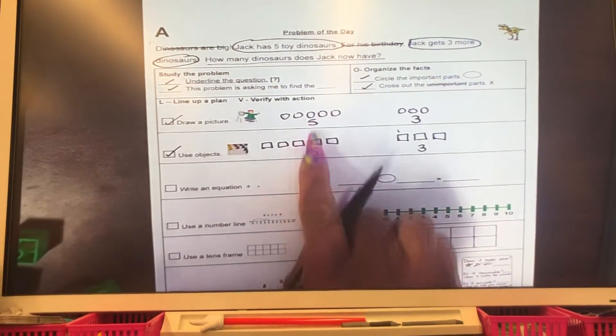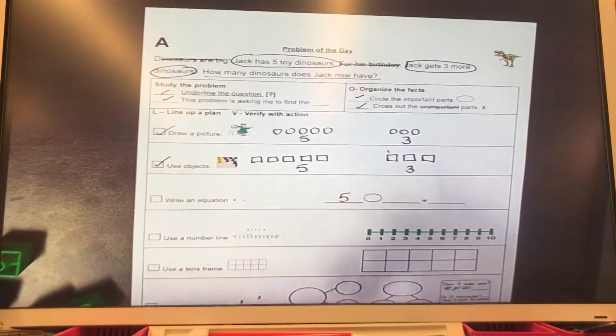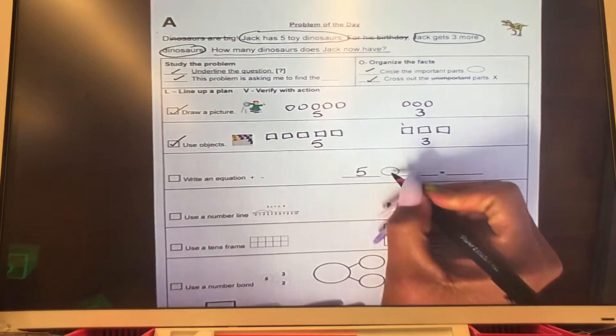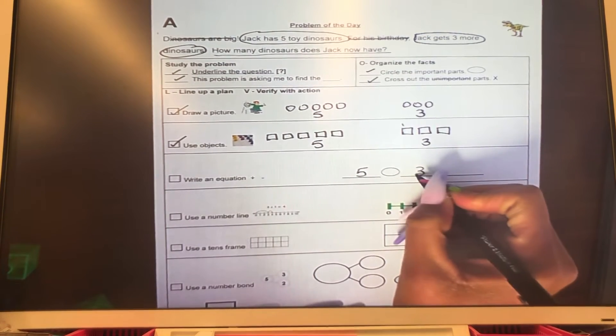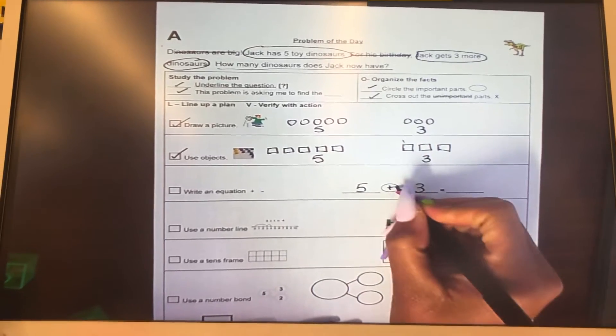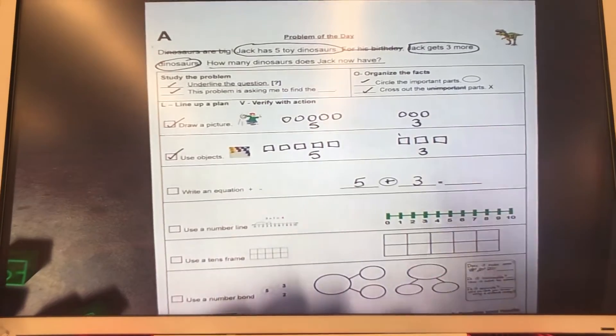So we have our five toy dinosaurs that Jack had at the beginning of this story. And then for his birthday, he had three more. Remember when we put things together, we use the addition sign. And when we counted our objects and we counted our pictures, we got eight.